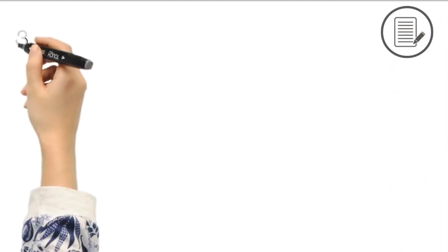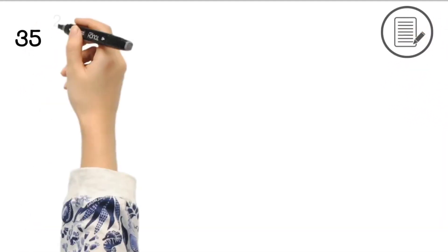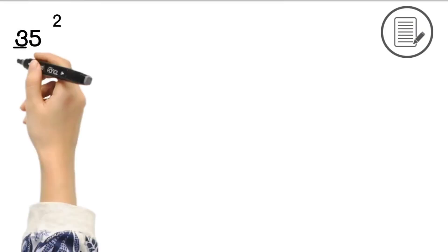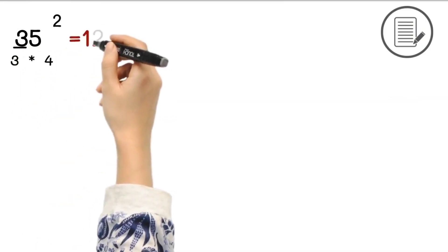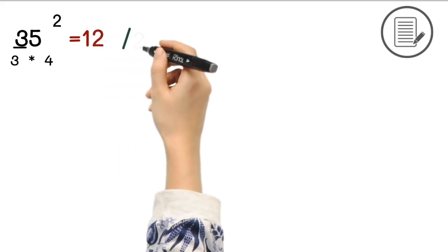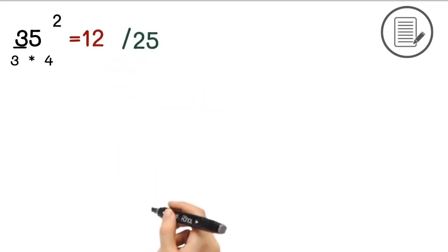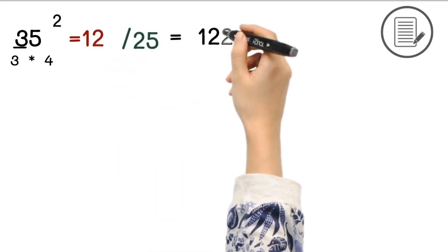Let's solve some more examples on it. Square of 35. Here tens digit is 3 and the next number is 4. So 3 multiplied by 4 equals 12 which is our first part. And 25 is the second part. That's why the answer will be 1225.